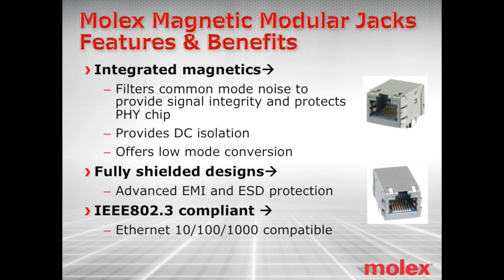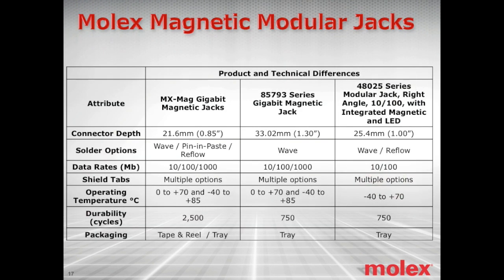Molex magnetic modular jacks feature fully shielded designs for advanced EMI and ESD protection, and are IEEE 802.3 compliant. There are three product options: MX Mag Gigabit magnetic jacks, the 85793 series gigabit magnetic jacks, and the 48025 series modular jack right-angle with integrated magnetics and LEDs. The comparison covers connector dimensions, board mounting and solder options, data rates, shielded tabs, operating temperatures, durability cycles, and packaging for CM.